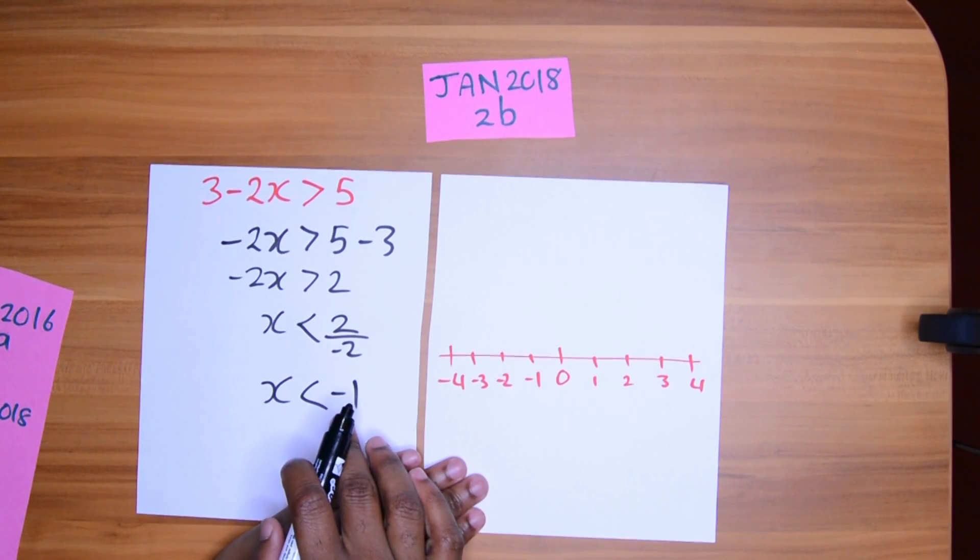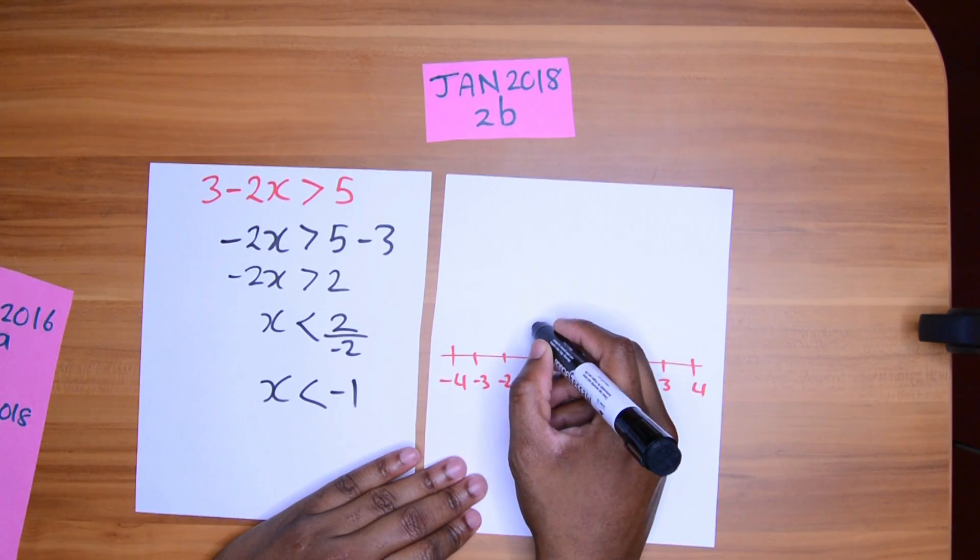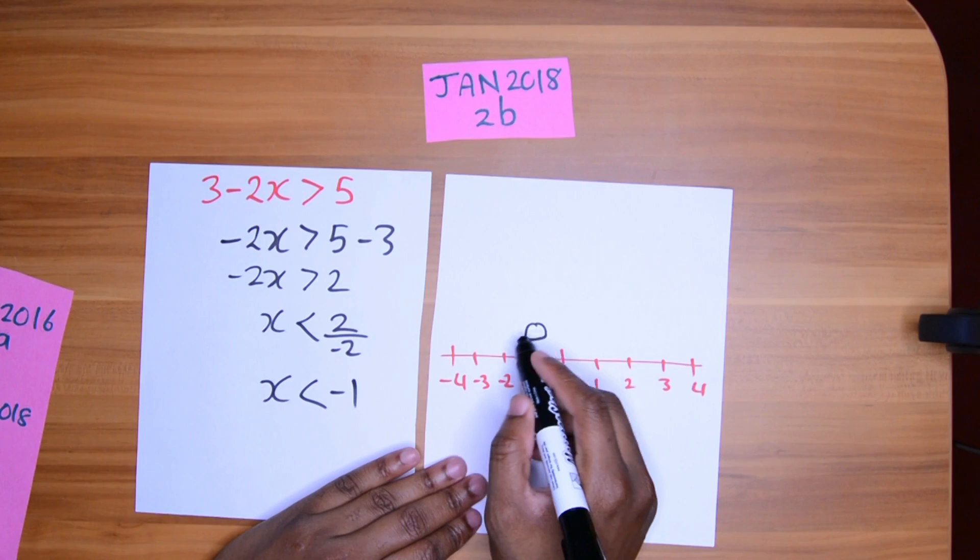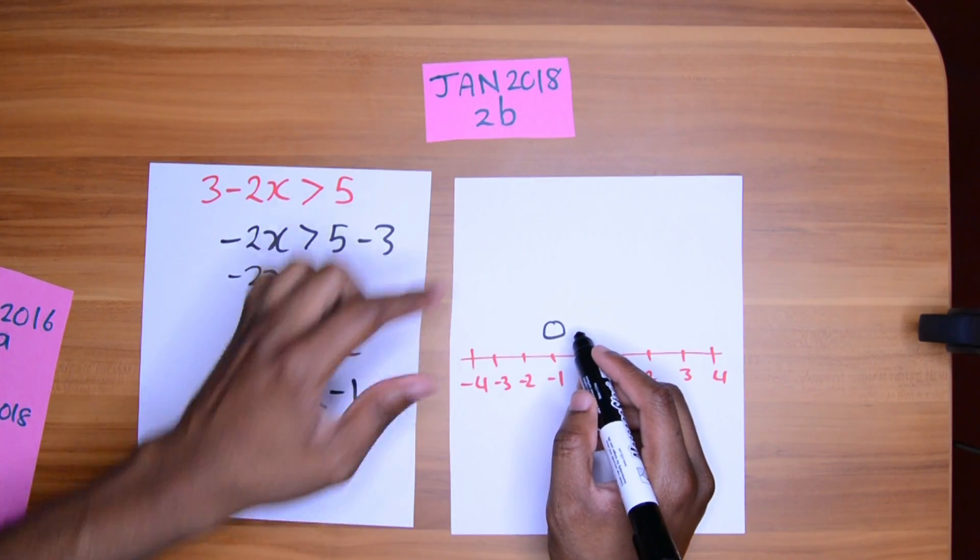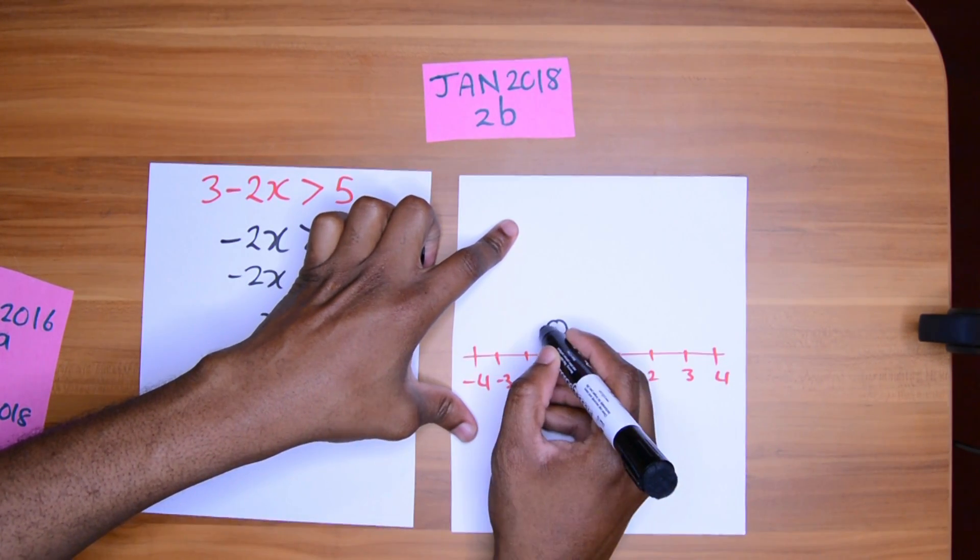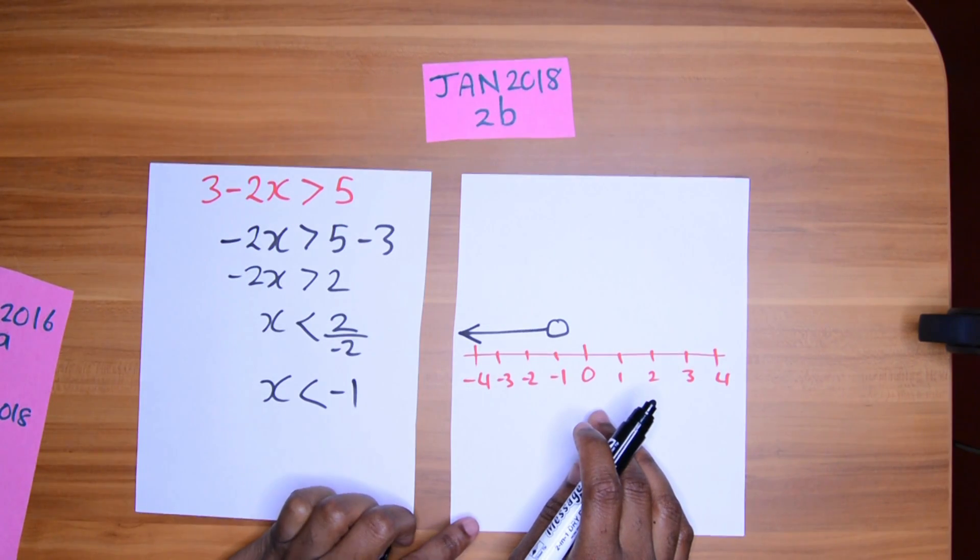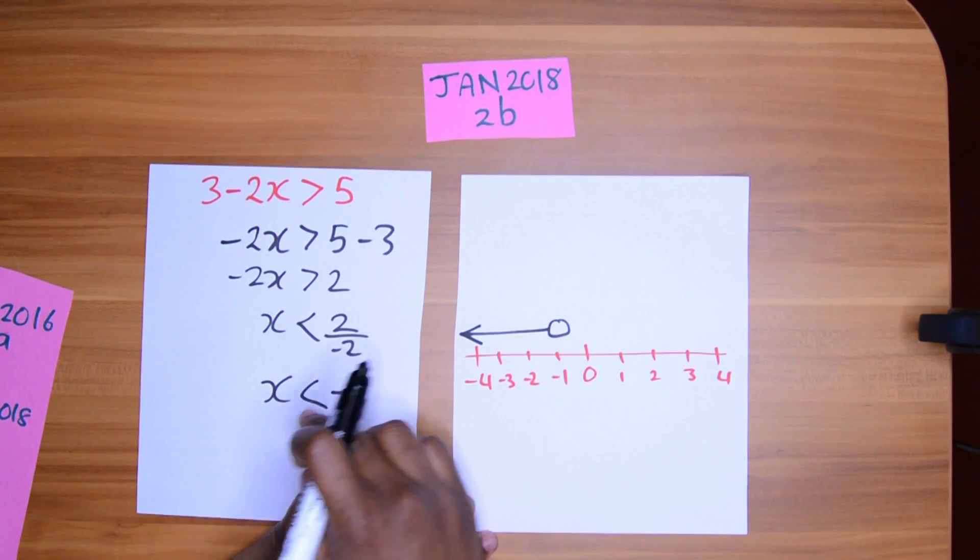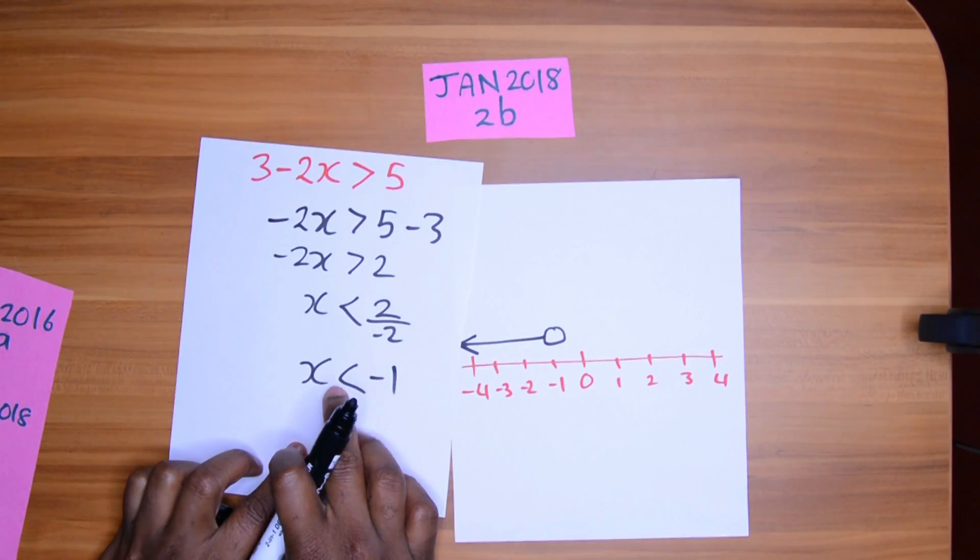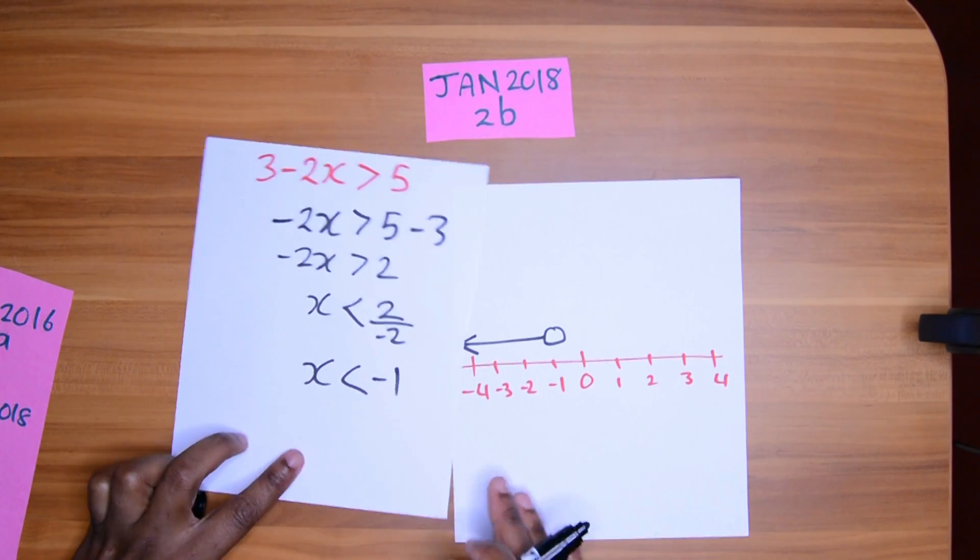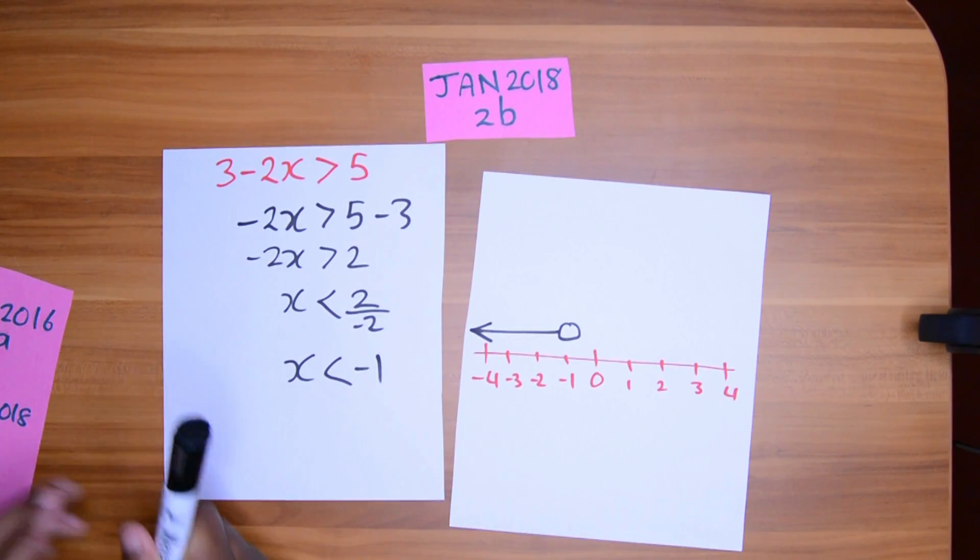x is less than negative 1 on the number line. We draw a circle. We do not shade the circle since there's no equal sign alongside the inequality. And we are going in that direction. Less than. x is less than. Since the small side is pointing to x, it means less than. Part B done.